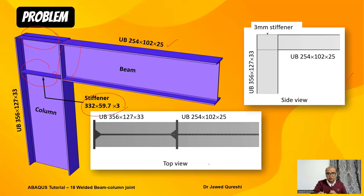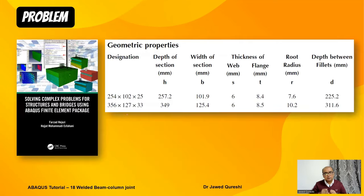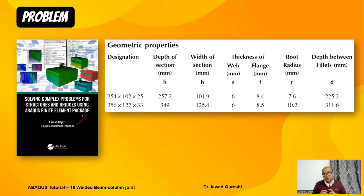Here is the side view of the joint and the top view as well. In the actual book where I took this information from, there are a few typos which I will mention. This is the book: 'Solving Complex Problems for Structures and Bridges Using Abaqus' by Isfahani. The geometric properties are given, including depth, width, and thickness of the section.